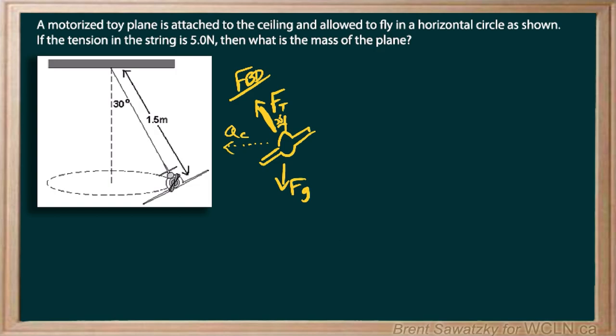So from there F net equals MA like any dynamics problem. So what are the forces acting on this? Now we can do this as components or we can do this in a vector sort of way. So let me do it in a vector way and you'll see that it's actually a pretty nice layout from a vector point of view.